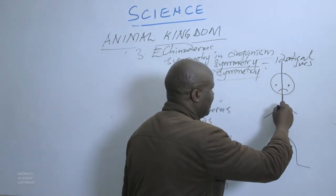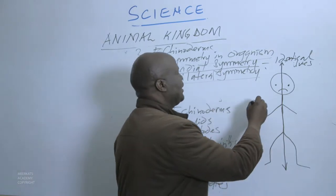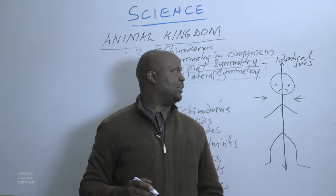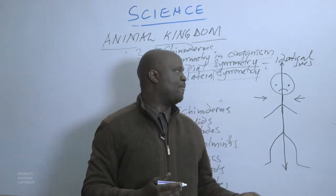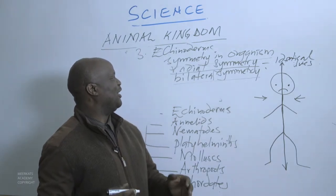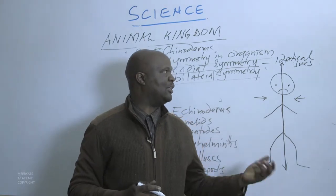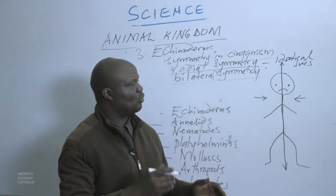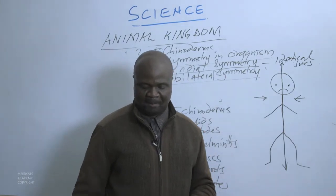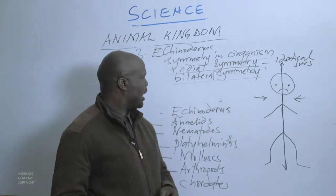If we cut this caricature of a human being in the middle, this side is exactly identical to the other side. Human beings qualify as bilateral symmetry — we can cut a human being into two equal halves that are identical. This is unlike the starfish, where we could dissect it in different ways and still get identical halves. So we have explained radial symmetry and bilateral symmetry.